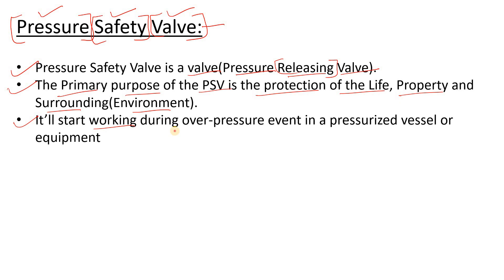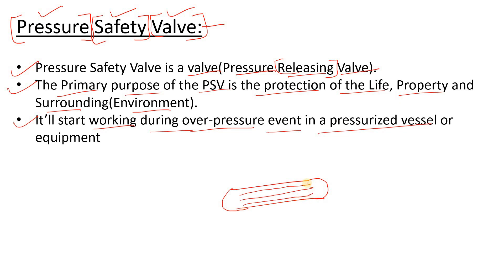For example, suppose we have a heat exchanger with tubes. If a tube fractures, something happens and the tube ruptures, then pressure will be created — the shell side pressure will increase. There may be a mishap, that's why we use a PSV here. The PSV will actuate and release the pressure from the shell side of the heat exchanger, protecting life, property, and the surrounding environment.